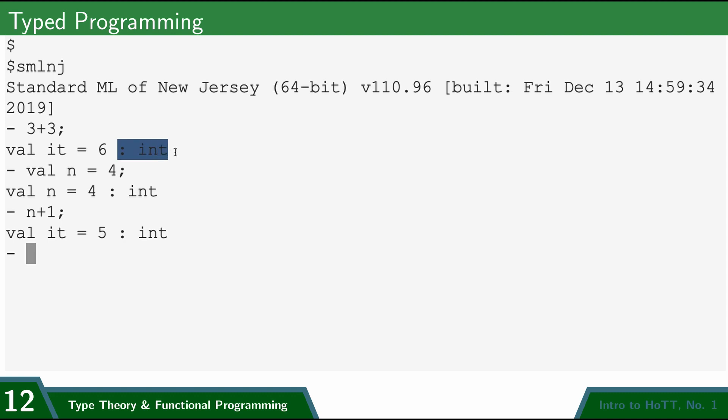Notice that it's printing out colon int after each of these expressions. That's not an accident, that's the typing. So int here stands for integer, so 6 and 4 and 5 are all integers.